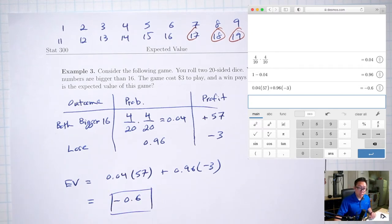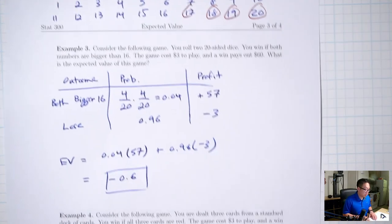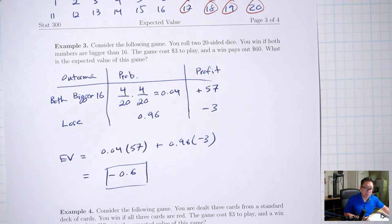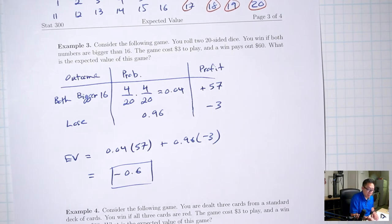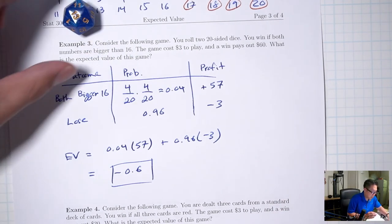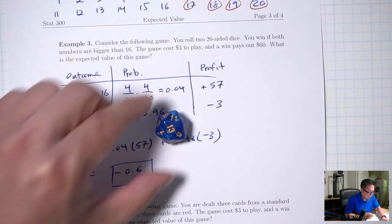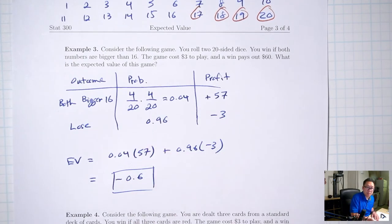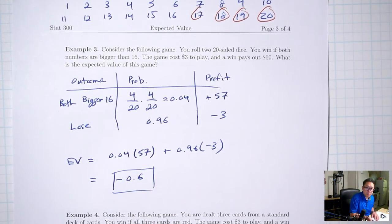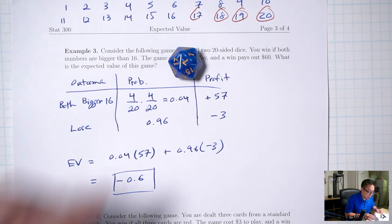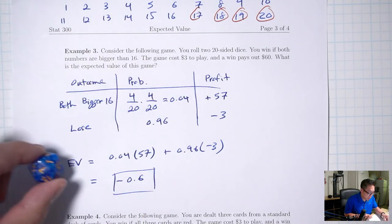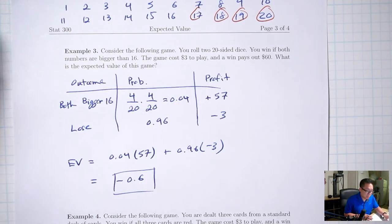This is definitely a game you don't want to play for long. But let's play it anyway — rolling two 20-sided dice. First die: 13. Second die: 7. You only win if both are bigger than 16, so you lost.